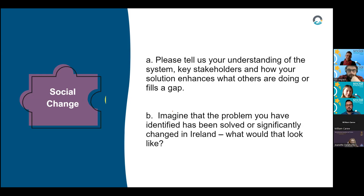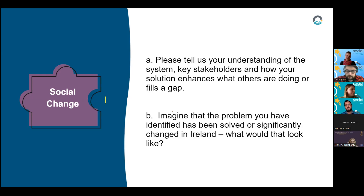For section B, we aren't necessarily looking only for changes that you are going to bring about — this is changes in wider society that could happen within the next 10 years where the problem you're tackling has been solved. For section A, think of it as a collective dance with other stakeholders — we want to understand who else is out there and how you are dancing with them, or how you would like to dance with them in the future.